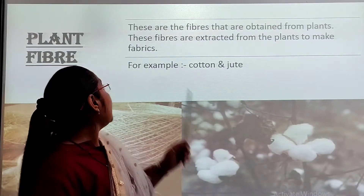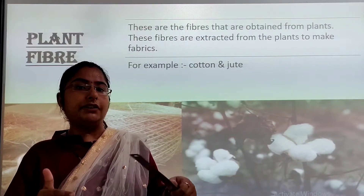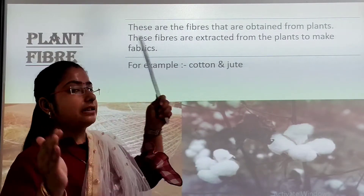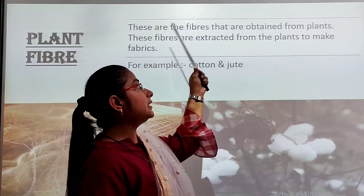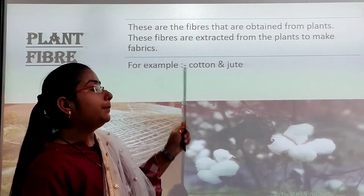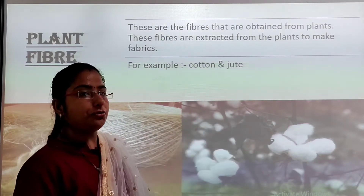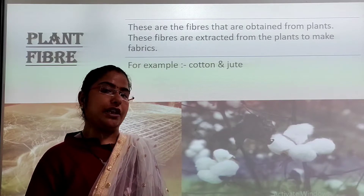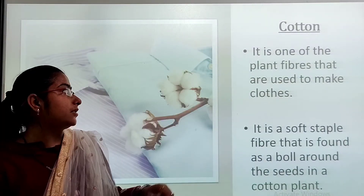Natural fibers are divided into 2 types: plant fibers and animal fibers. The fibers that are obtained from plants are called plant fibers. For example, cotton and jute. Cotton and jute are the 2 types of fibers which we get from plants, so we call them plant fibers.